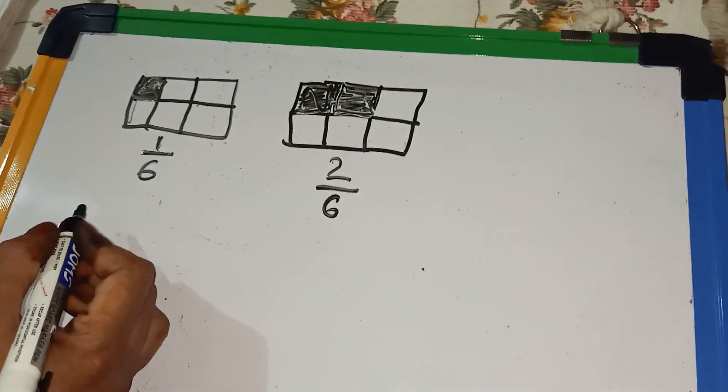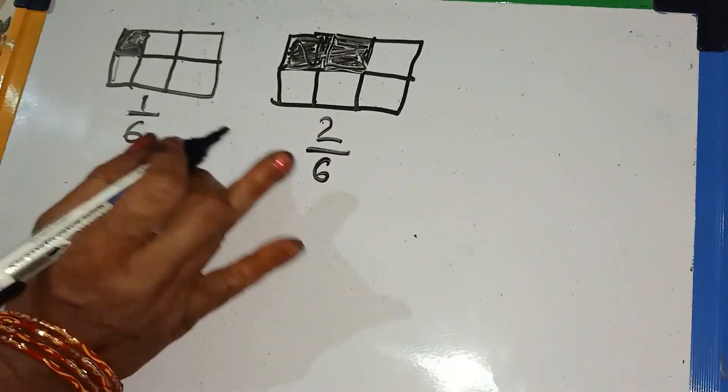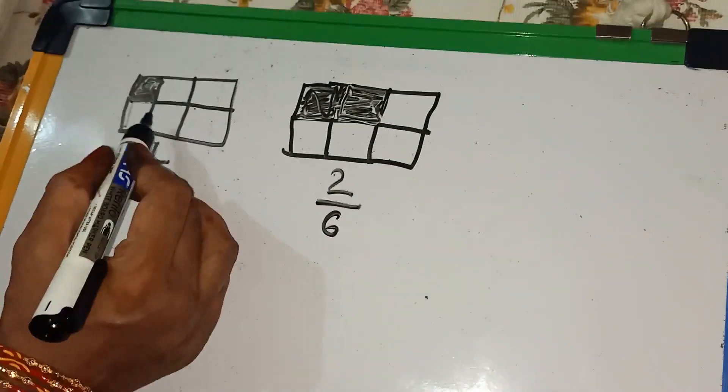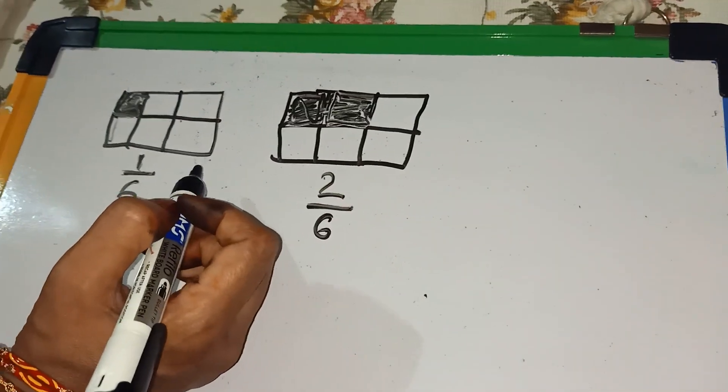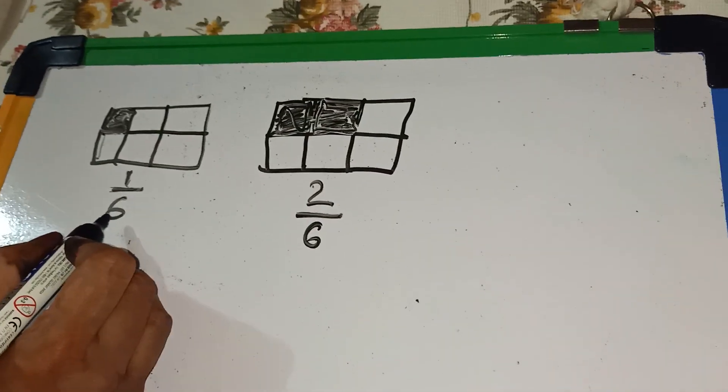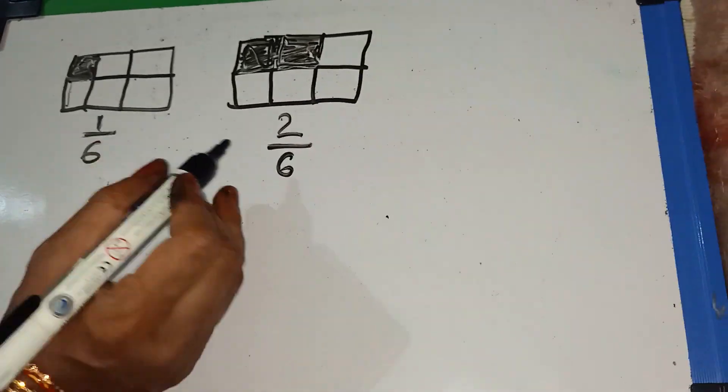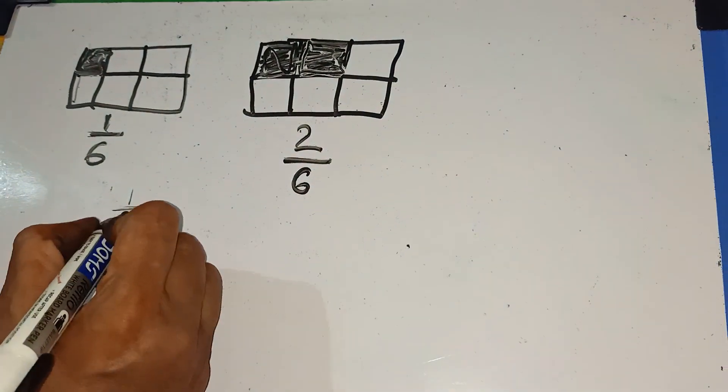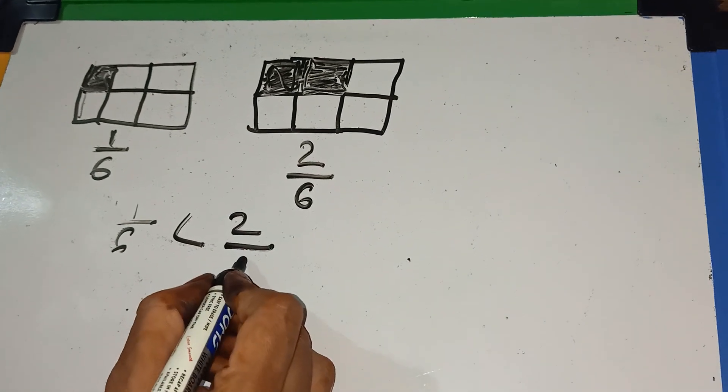So, the question is, how can you find the bigger from these two numbers? Which one is bigger? Simply, you can say the one part is smaller than two parts. So, if denominator is equal, you see which numerator is bigger. And from this, you can compare the two numbers. Like this, 1 by 6 is smaller than 2 by 6.